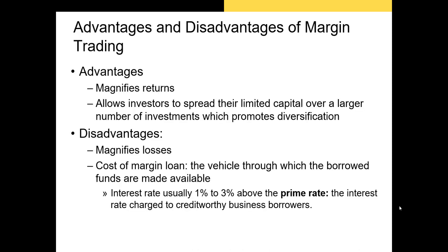The big reason you'd want to buy on margin is to get a higher return — margin allows you to magnify your return because you only owe what you borrowed plus interest, while any capital gains net of borrowing are yours. The big disadvantage is that you're increasing the amount you can lose, both because you owe what you borrowed and because you're paying interest on the loan — typically one to three percent above the prime rate, so you might be paying around five percent to your broker for a margin loan.